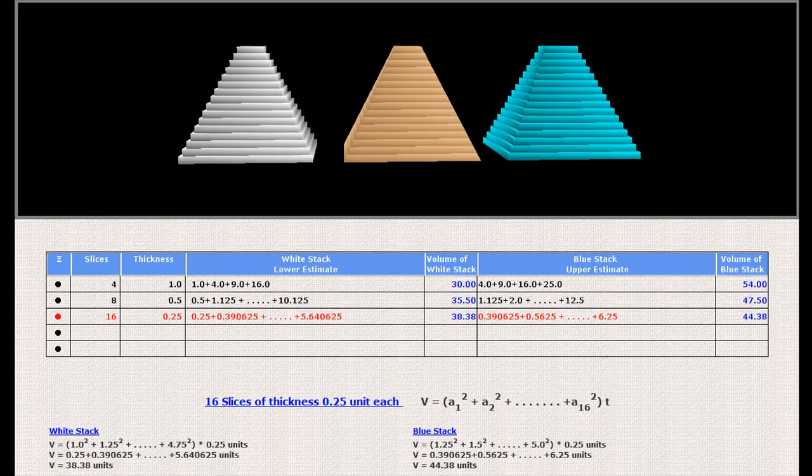Increasing the number of slices to 16 will show the volume to lie between 38.38 cubic units and 44.38 cubic units.